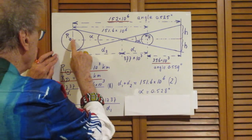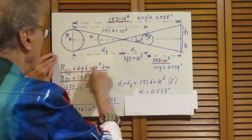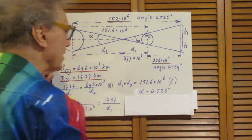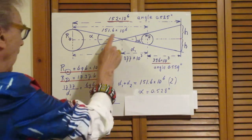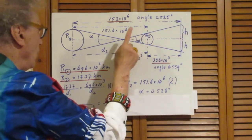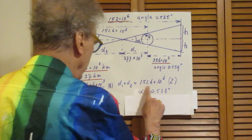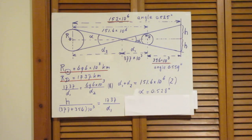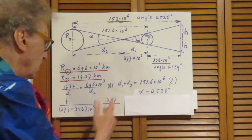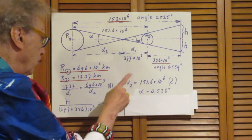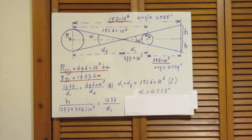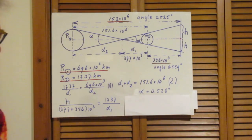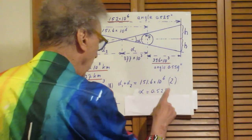However, you also know the distance from the moon to the sun, that is the 152 million kilometers, minus this distance from Earth to the moon. And so that gives you then the distance from the sun to the moon. So you know that d1 plus d2 is 151.6 million kilometers. Now you have two equations with two unknowns, so you can solve for d1, for d2, and you can solve for alpha. And you find immediately that d1 is 377,000 kilometers, and that the angle alpha is 0.528 degrees.